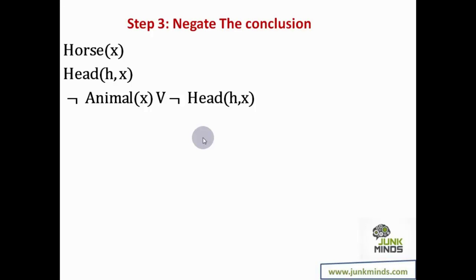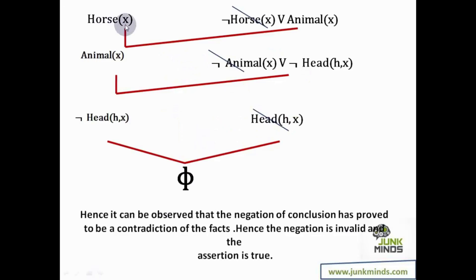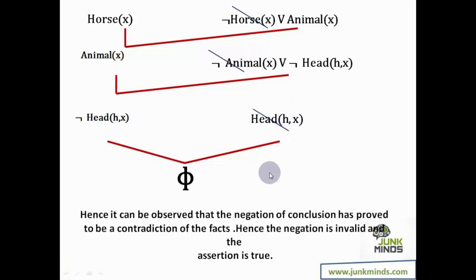You can start resolution using any of these predicates in step three and still proceed normally. But remember: whenever you have multiple predicates in step three, you will always be required to use all of them before you get your solution. So in step four, horse(X) from step three cancels with not horse(X) from step two, leaving animal(X). This gets cancelled; not head(H, X) gets carried forward, gets cancelled here, and this is how we conclude what is needed.